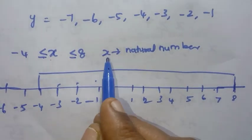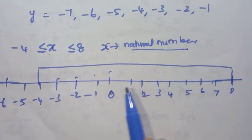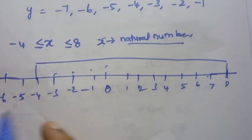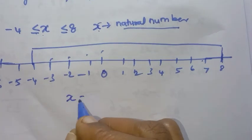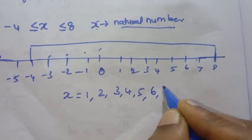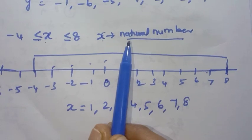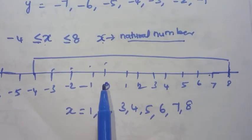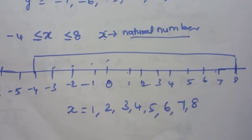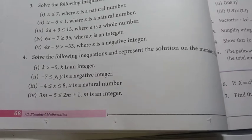Here we have a condition: x is a natural number. Natural numbers are 1, 2, 3, 4, 5, 6, 7, 8. Integers include negative numbers as well. If the condition is natural number, the answer starts from 1 equal to 8. If it is a whole number, it starts from 0. This is the answer.